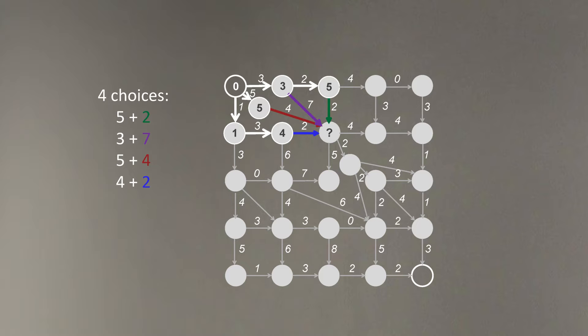In this case, we actually have four choices. And as before, we choose the variant which provides the longest path. In this case, this path is the optimal one, and we know that the optimal path from zero to the shown node has length 10.